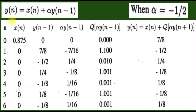For the same problem with alpha = -0.5, repeating the process shows that the output oscillates between -1/8 and +1/8. This is also a limit cycle oscillation — in one case a constant output, and in the other, oscillating between a positive and negative value, even though the input is zero. This is the problem of zero input limit cycle oscillation.